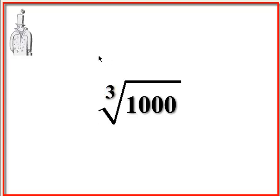What that is explaining is the number of roots that they want. So if there is no number there, it's always assumed to be the number two. It's always the square root if there is no number there.